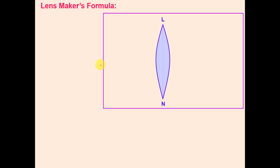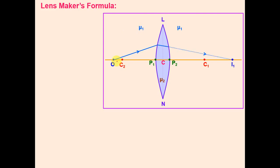Next is the lens maker's formula. For a simple lens, mu 1 is the refractive index of the rarer medium and mu 2 is the refractive index of the denser medium (the lens material). P1 and P2 are the poles of the two surfaces; C1 and C2 are their centers of curvature. With object O in the rarer medium, the ray refracts at the first surface, and neglecting the second surface, the image would form at I1 in the denser medium.